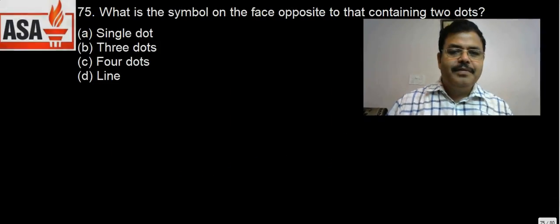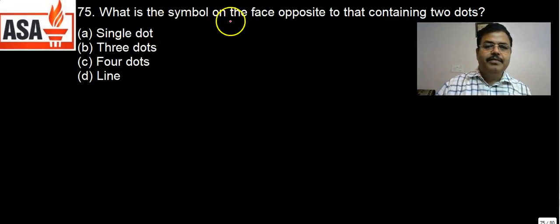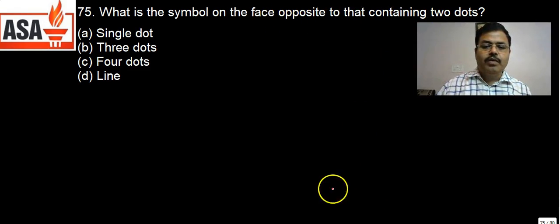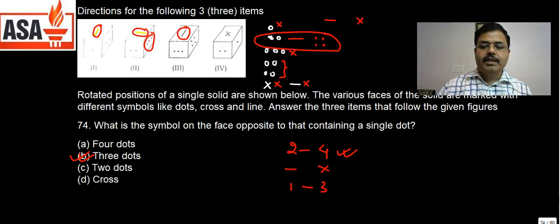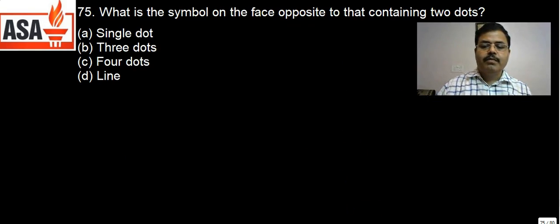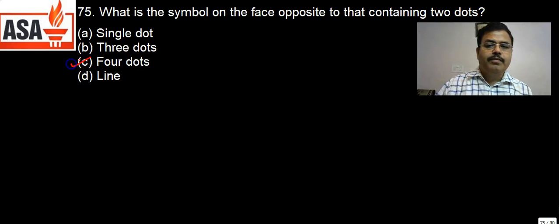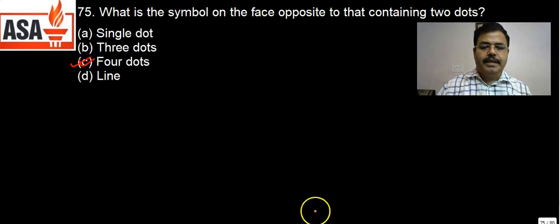Let us discuss question number 75: what is the symbol on the face opposite to that containing two dots? From the previous figure, we have seen that 2 and 4 are opposite to each other, because the 2-dot face and the 4-dot face are opposite. So the answer will be 2 and 4 — opposite to 2 dots there will be 4 dots. The answer will be C.